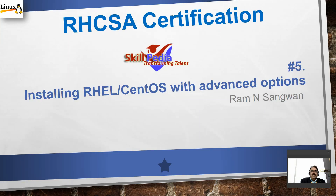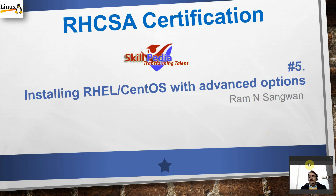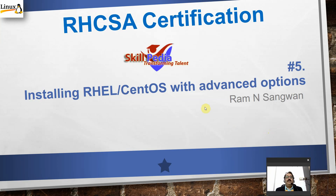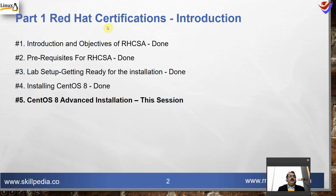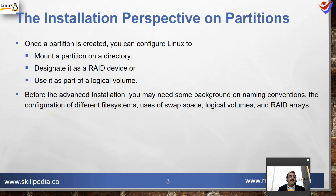This session is about advanced installation options for CentOS or RHEL. In the previous session we discussed a basic installation, selecting default options. In this session we'll be doing advanced installation of Linux or CentOS 8. This is part one of the overall RH CSA training, covering introduction, prerequisites, lab setup, and installing CentOS 8, and now this advanced installation.